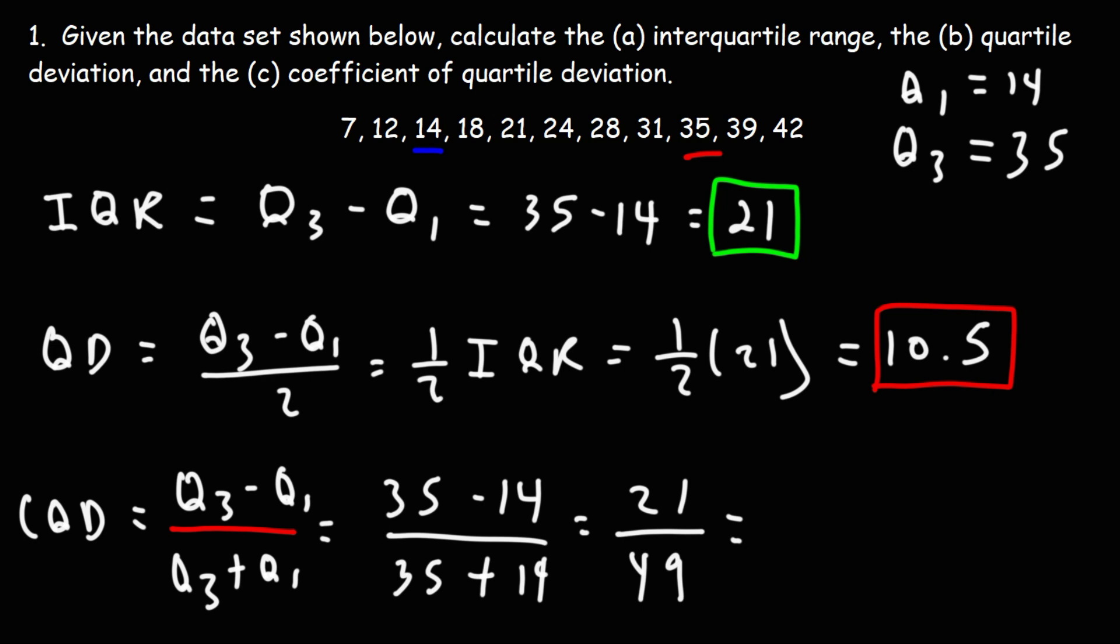So let's get the decimal value that corresponds to this. 21 divided by 49 is approximately, if we round it, 0.429.